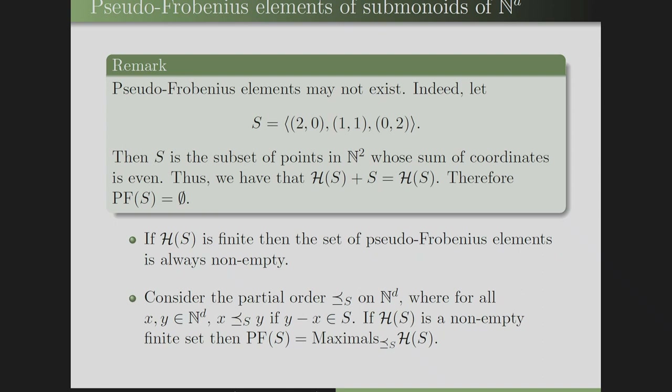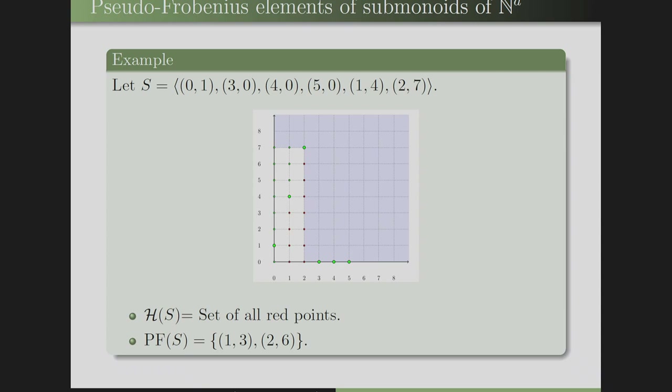Consider the partial order on N^D defined as X ≤ Y if Y minus X is in S. With this partial order, PF(S) is the set of maximals of H(S). For example, in a given semi-group, the large green points are generators, the green points and points in the shaded region are elements of the semi-group, and the red points form H(S). The maximum elements of H(S) — shown as two specific points — are the pseudo-Frobenius elements.